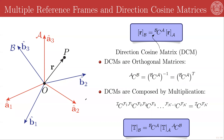For now, we will postulate that this is a useful thing, and as we go along, we will demonstrate to ourselves that this is a useful thing. But now we have the problem of how do we convert between the representation of a vector between two different frames. And the machinery for that is given to us by things called direction cosine matrices.